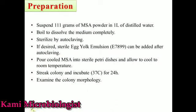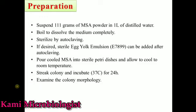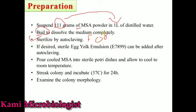Now, how do we prepare this media? If the MSA powder is available, add 111 grams to 1 liter of distilled water and mix it. Heat or boil it using a hot plate at a temperature of 60 to 70 degrees Celsius, then sterilize it by autoclave for 15 minutes at 121 degrees Celsius.